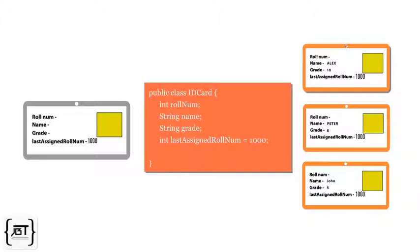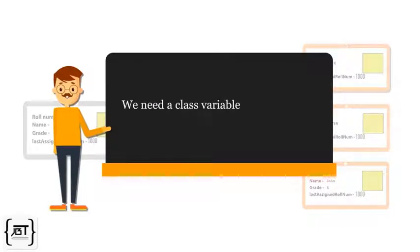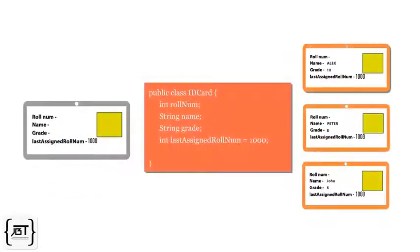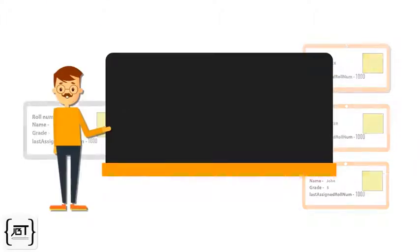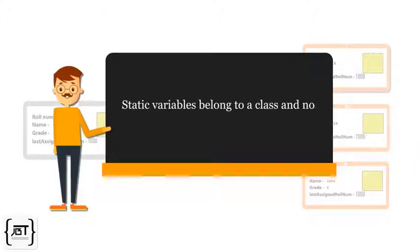What we need is a variable that has a single value across all ID cards, something like a global variable. That means we need a class variable instead of an instance variable. We can easily achieve this in Java by declaring the variable as a class variable by using the keyword static. Static variables belong to a class and not to an instance of the class.